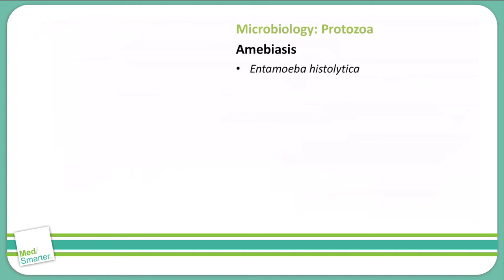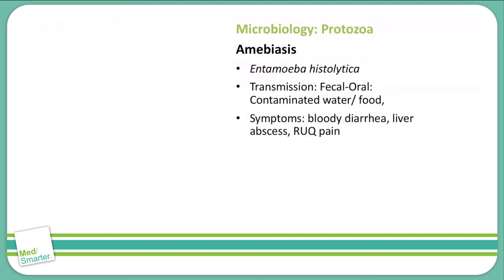Next we will talk about amebiasis, which is due to Entamoeba histolytica. Once again, our transmission is a fecal-oral route, coming specifically through contaminated water or food. The symptoms of an Entamoeba histolytica infection include bloody diarrhea, which is different from the fatty, foul-smelling diarrhea of giardiasis. You can also see liver abscesses.